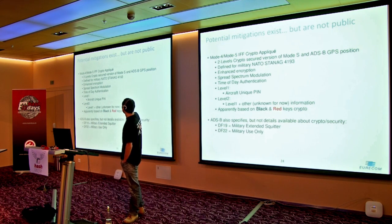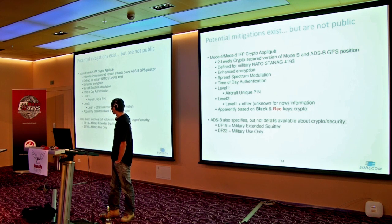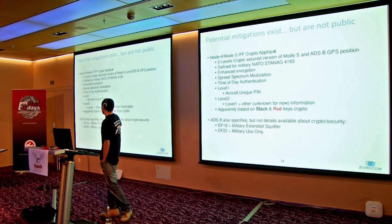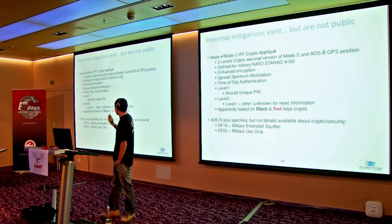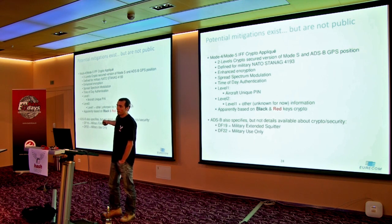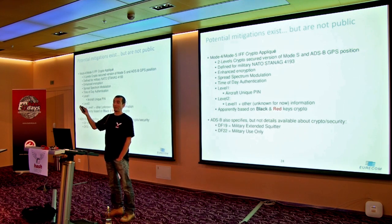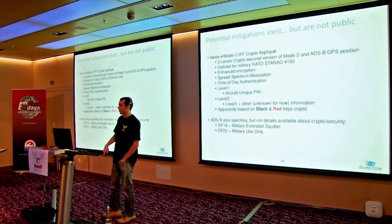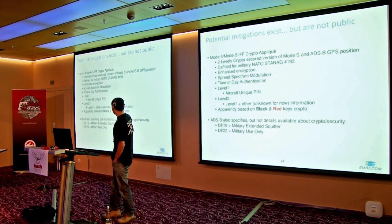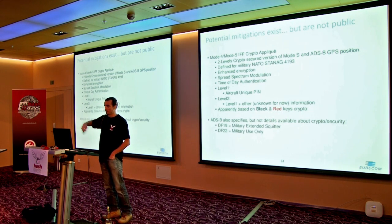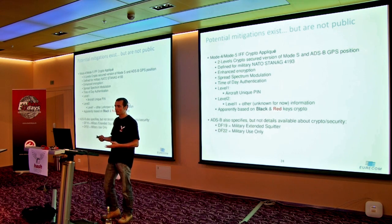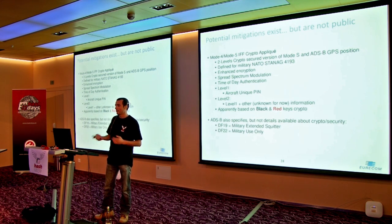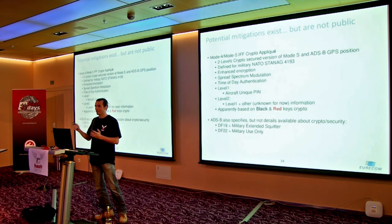There apparently exists an ADS-B crypto-secured version used in military — they call it Mode 4, Mode 5 IFF — Identify Friend or Foe — crypto applique, defined in a military standard. According to limited information, they use black and red keys crypto type. The problem is this model is broken: if it's military and governments are involved, leakage of red keys compromises all the black keys. And because there's no mutual trust in the whole system, they can't distribute keys to everybody — it's a mess, though a compromise solution could be found.